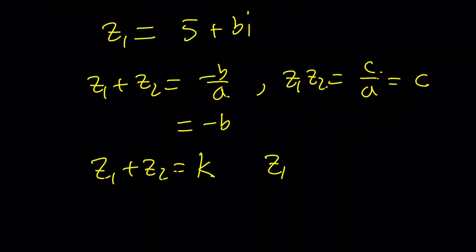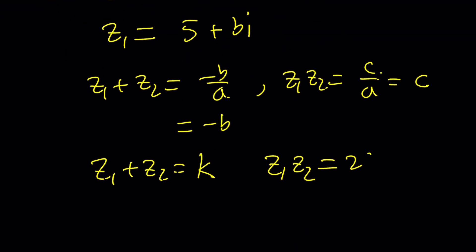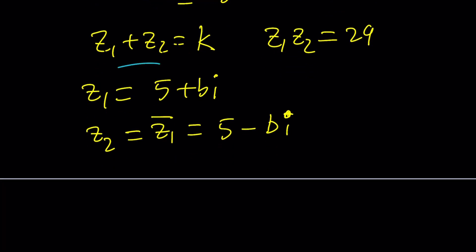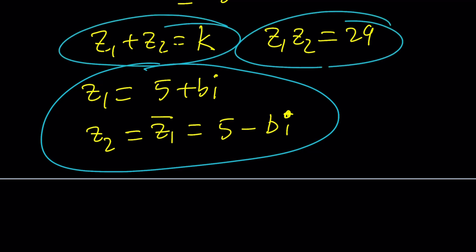What about z1 times z2? z1 times z2 is supposed to be c, which is 29. Now, here's one thing that you should keep in mind. If z sub 1 is equal to 5 plus bi, and it's a complex number, then its conjugate is supposed to be the other solution. In other words, z sub 2 is supposed to be the conjugate of z sub 1, which can be written as 5 minus bi. Now, why is this happening? Because when you multiply a complex number by its conjugate, you always get a real number. And when you add them, you also get a real number because the imaginary parts cancel out. That's how we're able to get these two real values. So, let's go ahead and solve this problem now.